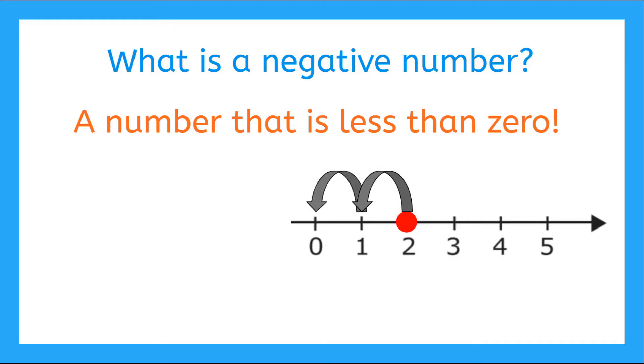But if it's three degrees, we need to go one more over. And what is that number? One less than zero is called negative one.